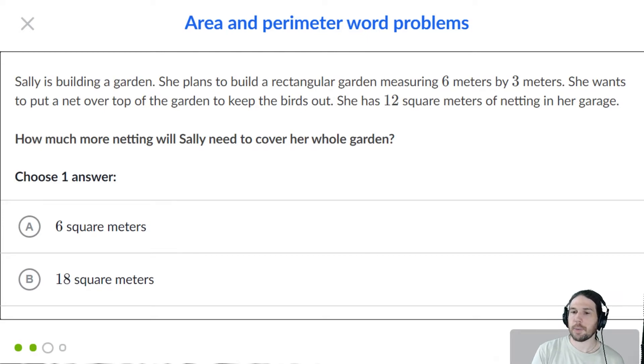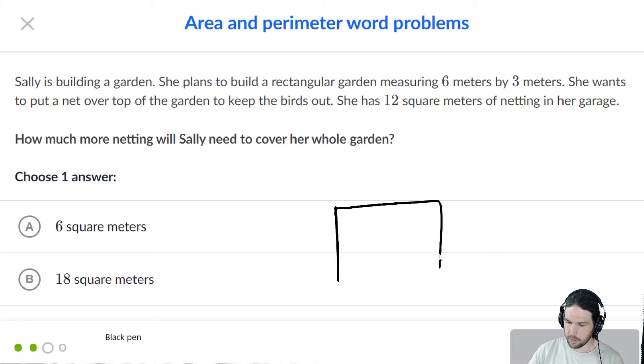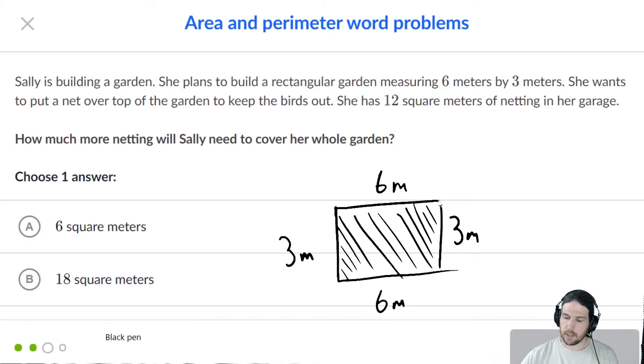Sally is building a garden. She plans to build a rectangular garden measuring six meters by three meters. So let's go ahead and make another one of those. Six meters by three meters. She wants to put a net over the top to keep the birds out. She has 12 square meters. Aha, there's a hint again. 12 square meters of netting in her garage. We're talking about square meters. That means we are talking about area, not perimeter.